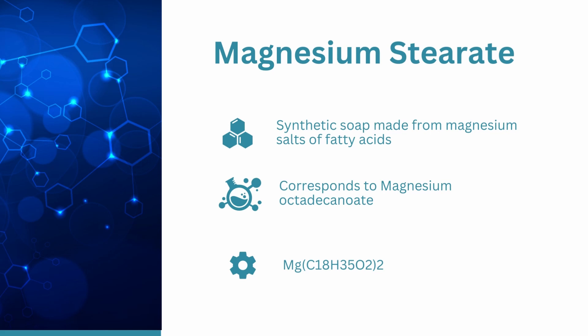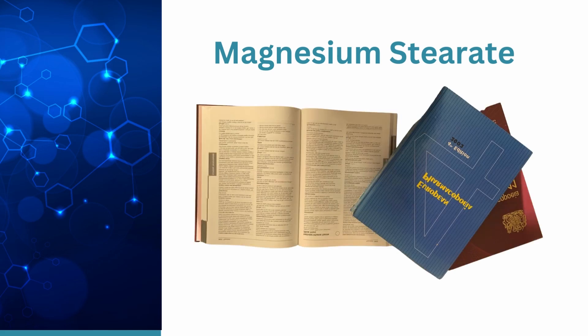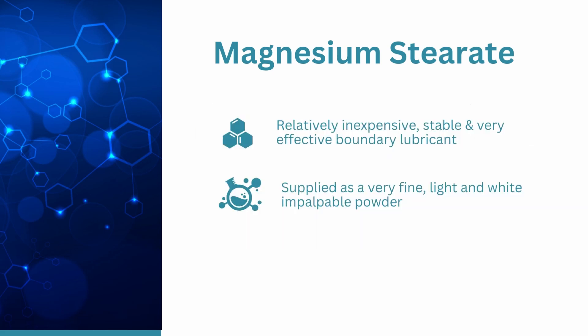It corresponds to magnesium octadecanoate and has the chemical formula shown here. In the United States Pharmacopeia, magnesium stearate is described as a compound of magnesium with a mixture of solid organic acids, mainly varying amounts of magnesium stearate and magnesium palmitate. The European Pharmacopeia similarly describes it as a mixture of solid organic acids consisting chiefly of variable levels of magnesium stearate and magnesium palmitate. It is a relatively inexpensive material, chemically stable, has a high melting point and outstanding lubrication property. Commercial grades are supplied as very fine, light and white, impalpable powder of low bulk density.